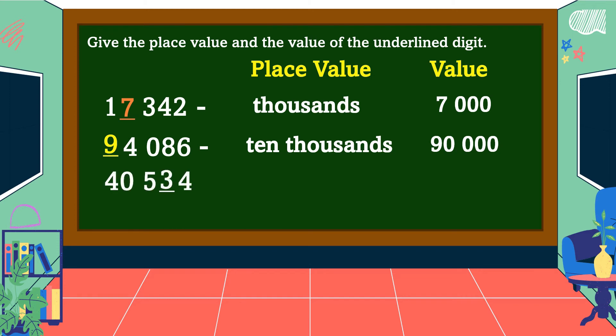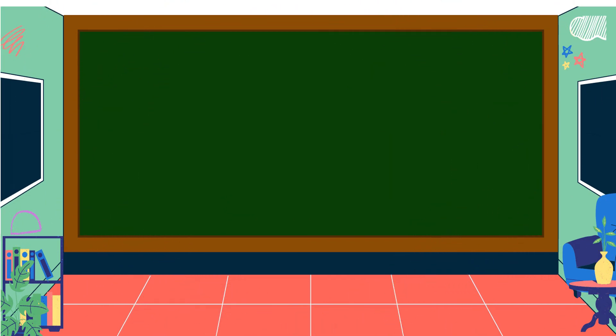The last number. The underlined digit is 3. What is the place value of 3? Yes, you are right — the place value of 3 is tens. And what is the value of 3? Very good — the value of 3 is 30. Congratulations! You now know how to give the place value and value of a digit in a number.